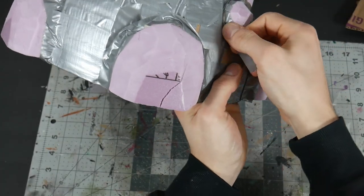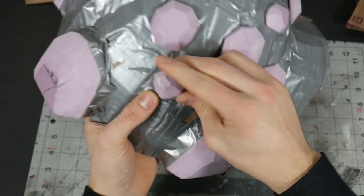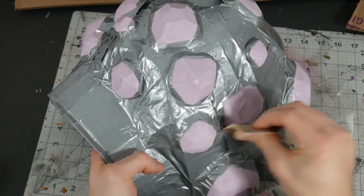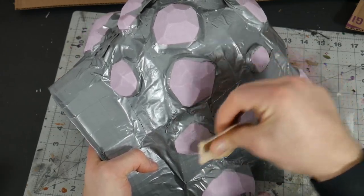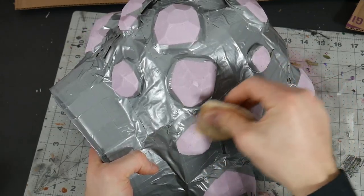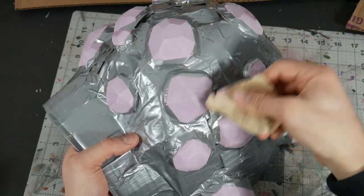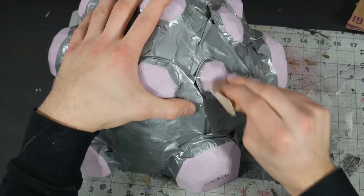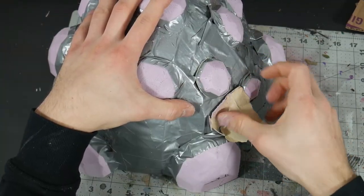Then I also used some duct tape and made that flush, just like I did with the other parts. Once that was done, I took some sandpaper and very lightly just brushed over it. I just wanted to get rid of those harsh edges and make it more smooth, so when I painted, it just looked a little bit more organic.